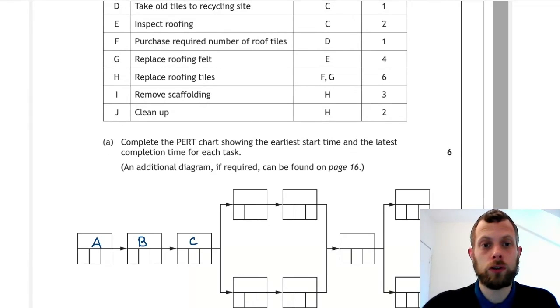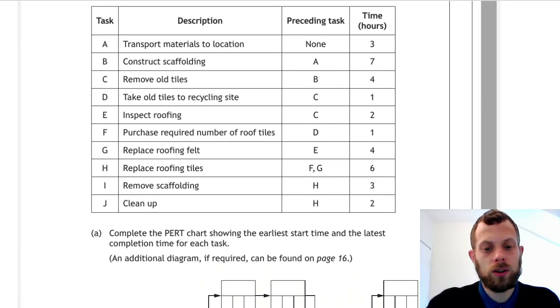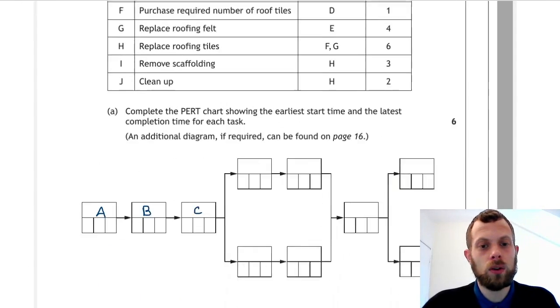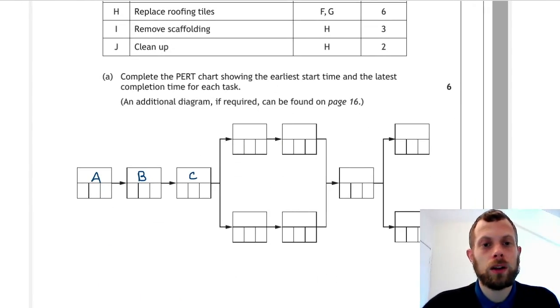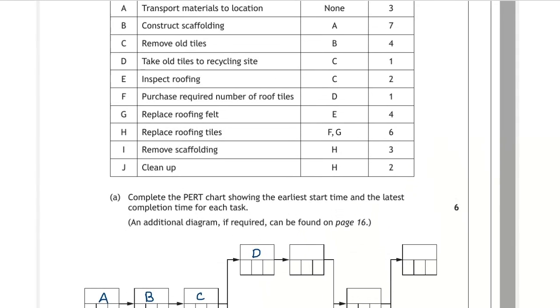Depending on task C are D and E, and they can go in either order. You can either have D going here or D going here. It doesn't matter which way around it goes. This is D and this is E. Now we need to see what depends on D.